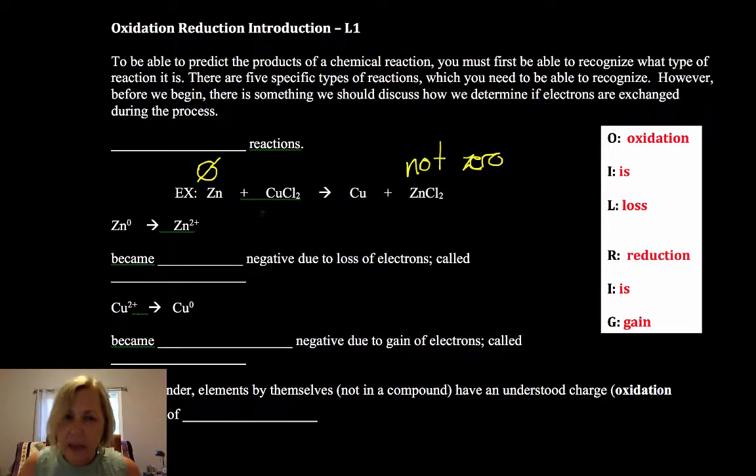Here the copper is in a compound so it's not zero and it became pure copper and it's zero. So sometimes you can look at elements going in and out of compounds and that can give you a rough idea whether or not it's a redox reaction.